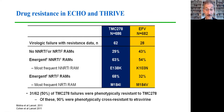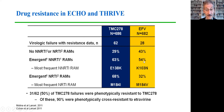In the case of rilpivirine, which used to be called TMC278, we see a very different and interesting pattern of resistance. These data come from the phase three trials of rilpivirine — the ECHO and THRIVE studies — in which rilpivirine was compared to efavirenz. There were roughly similar proportions of participants who developed NNRTI resistance at the time of treatment failure. Those in the rilpivirine arm saw the emergence of E138K, and those in the efavirenz arm had emergence of K103N. But notably, nearly twice as many people in the rilpivirine arm had emergence of nucleoside resistance compared to the efavirenz arm.